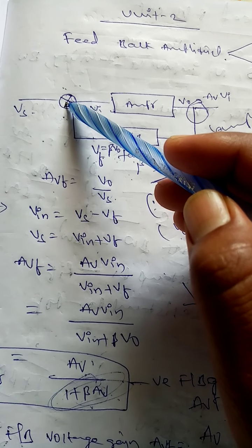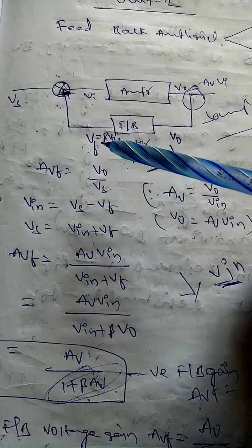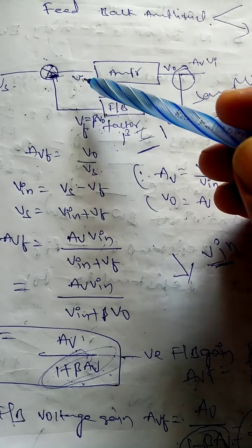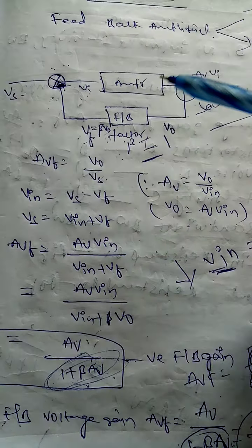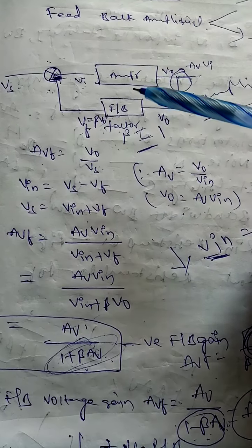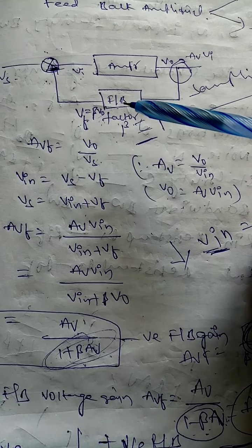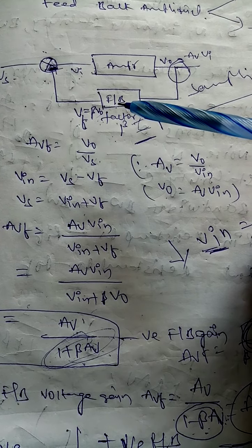Good morning friends. Today I'm going to explain about the feedback amplifier. A feedback amplifier means we are taking part of the output and giving it back, adding it to the input. Based on this mixer point — whether we are adding or subtracting — there are two types: one is the positive feedback circuit and another one is the negative feedback circuit.